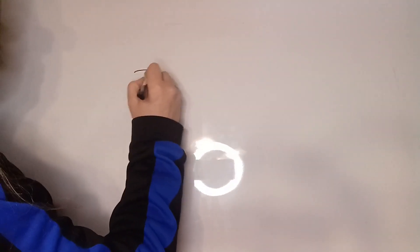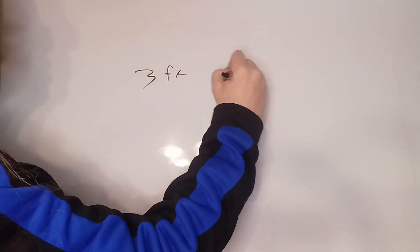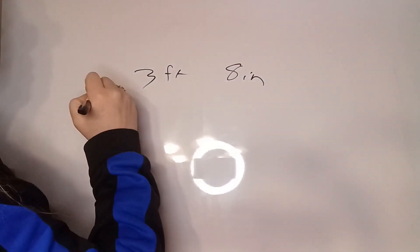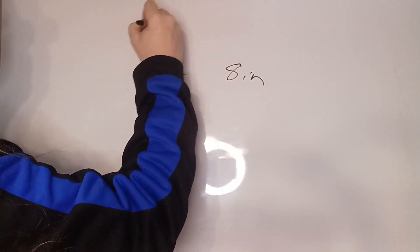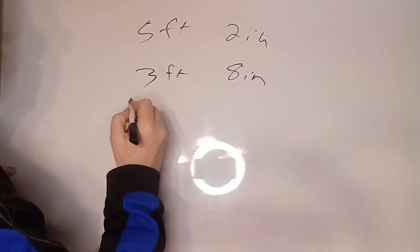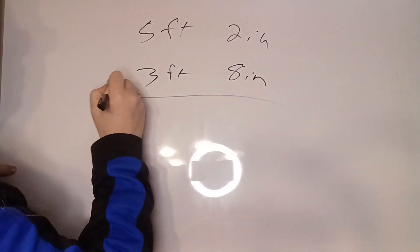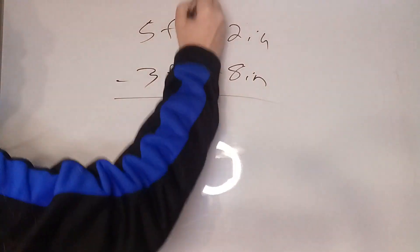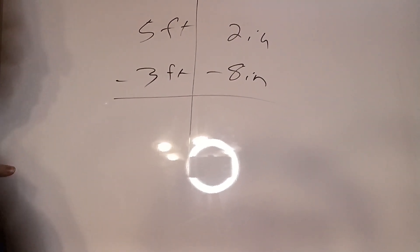Let's take a look at a subtraction problem using multiple units. When we're subtracting, these are negative, and we look at them separately here.